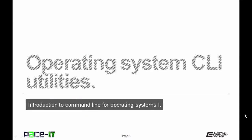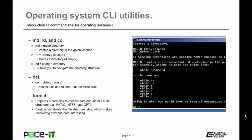Let's talk about some OS command line utilities, starting with directories. MD stands for make directory and creates a directory in a given location. RD stands for remove directory — it deletes a directory if the directory is empty, meaning no files or folders in it. CD allows you to change directories — it's the navigational command. Del stands for delete — it erases things and can delete files and folders, but not directories.